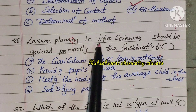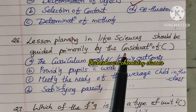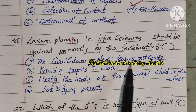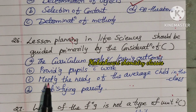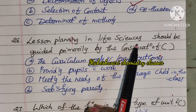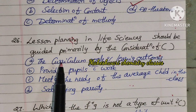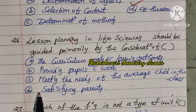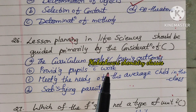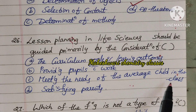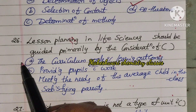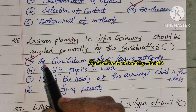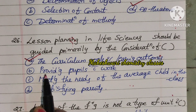Twenty-sixth question: Life sciences lessons should be guided primarily by the consideration of — curriculum goals and learning outcomes, providing pupils with work, meeting the needs of the average child, or satisfying the parents. If you want to learn a life sciences lesson plan, we consider the curriculum goals and learning outcomes. Option A is right.